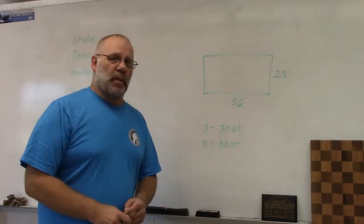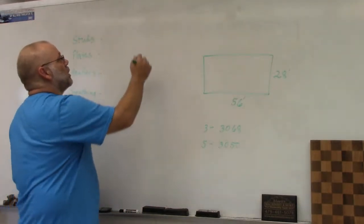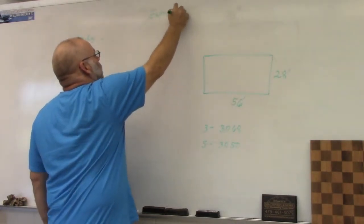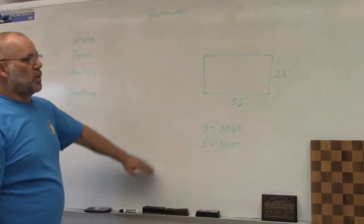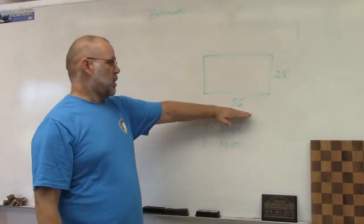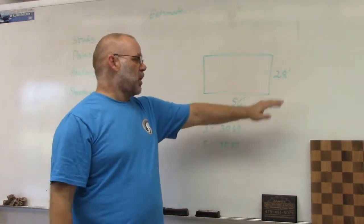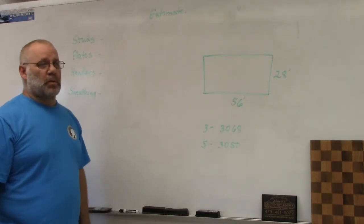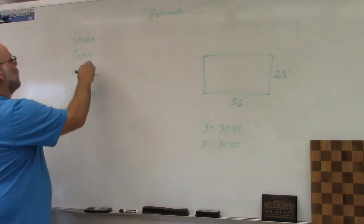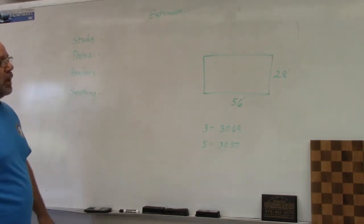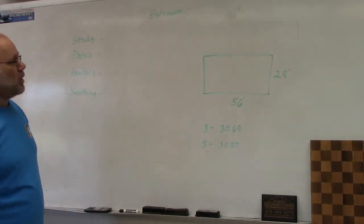We're going to figure out the materials needed for the exterior walls of this ranch style house. The information we need is the length of the house, the width of the house, and how many doors and windows. We're going to figure our studs, plates, headers, and sheeting that go on the house.